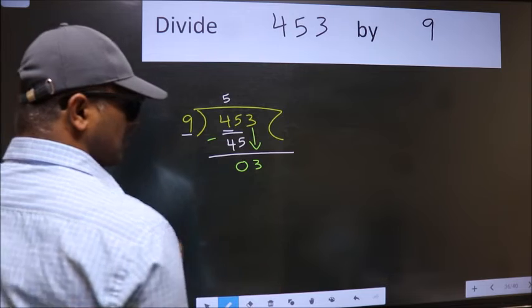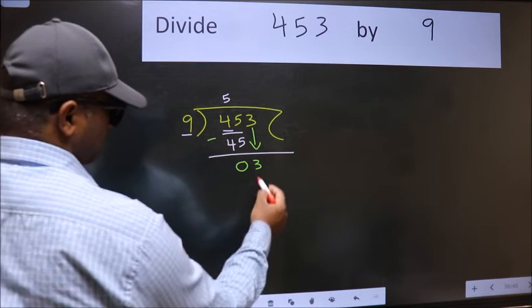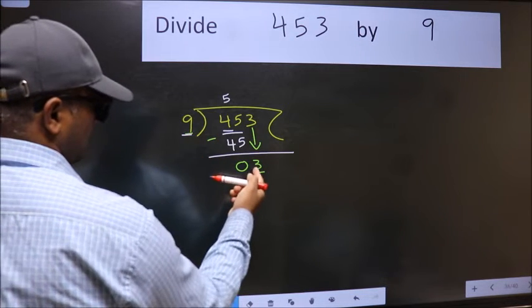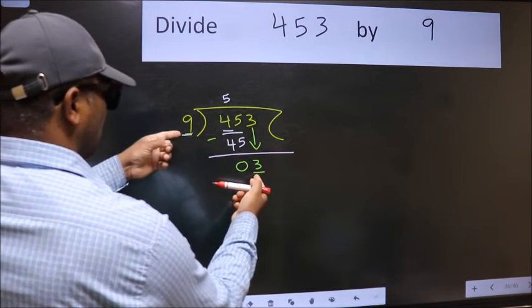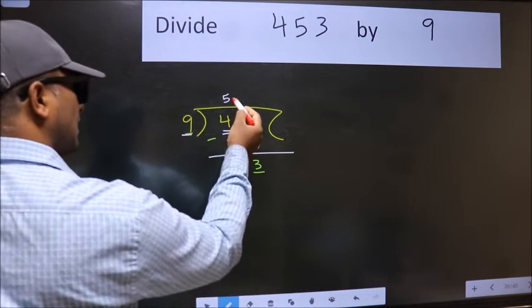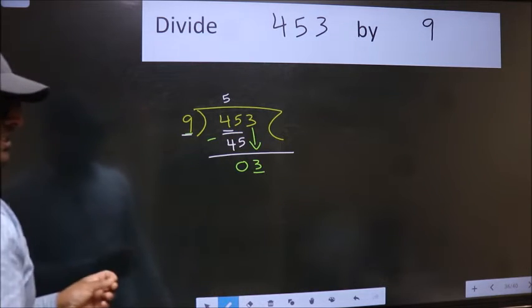After this step, the mistake happens. Here we have 3 and here 9. 3 is smaller than 9, so what many do is they directly put a dot and take 0, which is wrong.